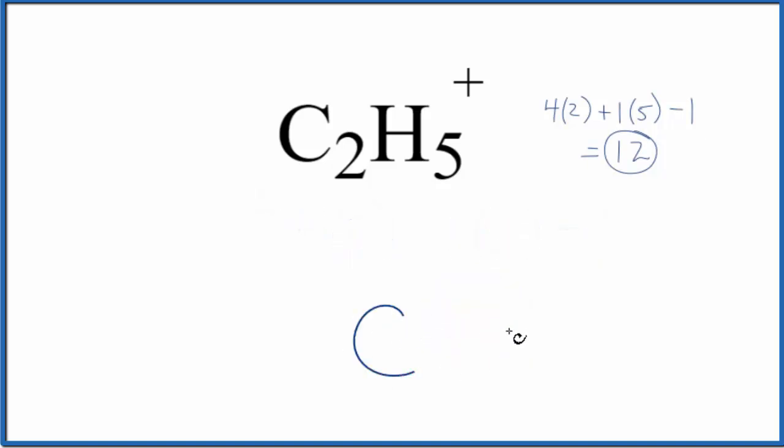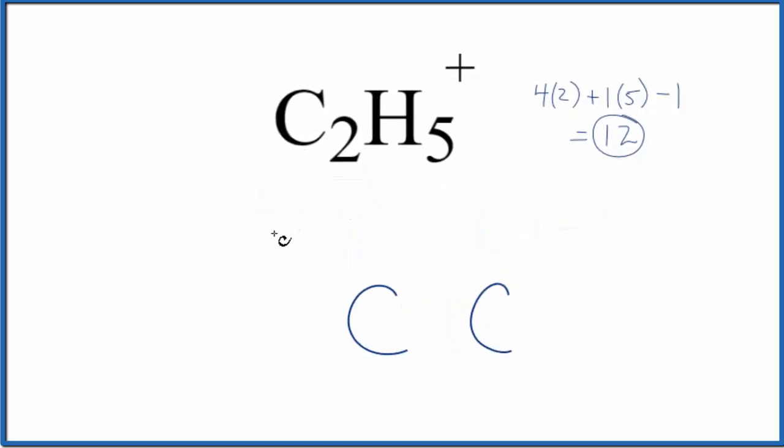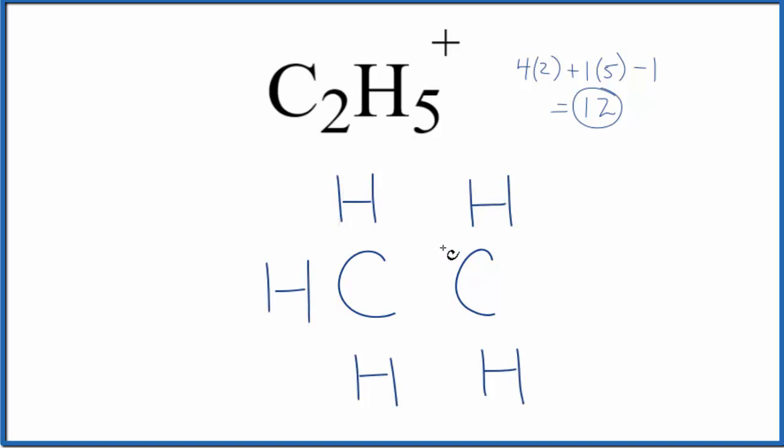Let's put our two carbons here next to each other, and we'll put hydrogens around them. Next, let's put a pair of electrons between atoms. This is going to form the chemical bond. Remember, we only have 12 valence electrons.